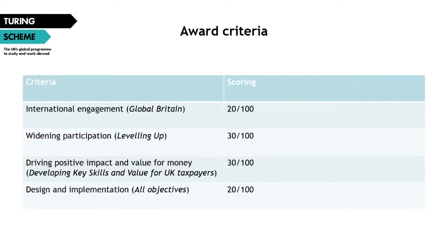Each application is scored out of a total of 100 points split across the various award criteria. International Engagement focuses on the Global Britain objective and is given a maximum of 20 points. Widening Participation relates to the leveling up objective and can earn up to 30 points. Driving Positive Impacts and Value for Money relate to developing skills and value for UK taxpayer objectives and can score a maximum of 30 points. Design and Implementation can touch on all objectives and is given a maximum of 20 points. Assessors apply principles around proportionality relative to the size and profile of the applicant and budget numbers requested.